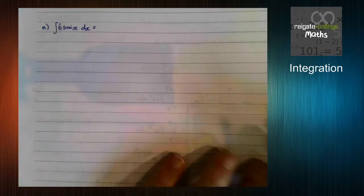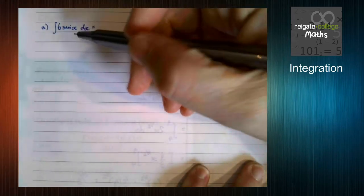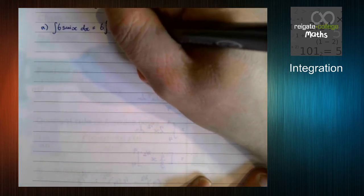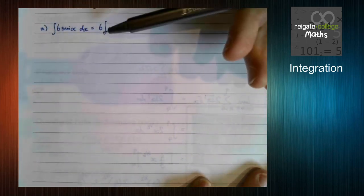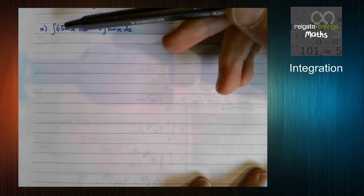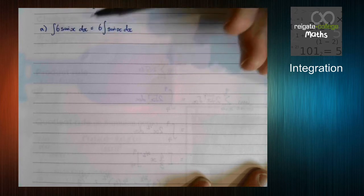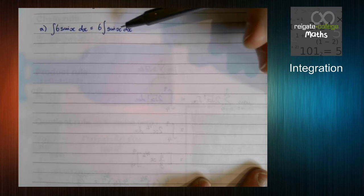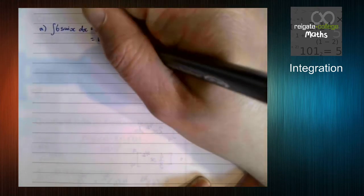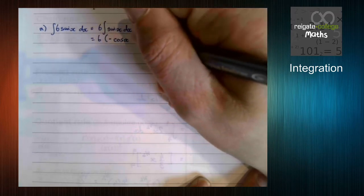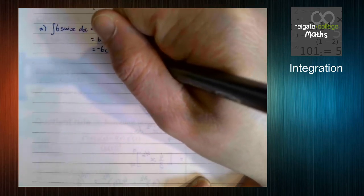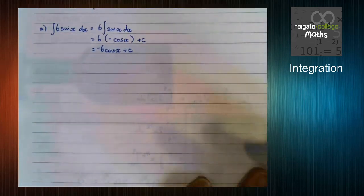So 6 sine x with respect to x. When we're integrating them, we've got numbers on the front of our integral, what we can do is we can move them outside. Now this is, you've got to be careful with this. It's much like factorizing. If you've got multiple terms, they all have to have a factor of six to take six out. But if they do, that's all good. You can do that. From here, sine x integrates, as we've seen, to minus cos x. So this just becomes minus six cos x plus c. So don't forget your plus c's.